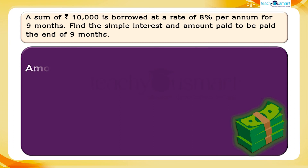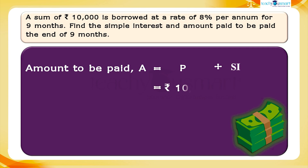Therefore, the amount to be paid at the end of nine months is principal plus interest, equals 10,000 rupees plus 600 rupees, equals 10,600 rupees.